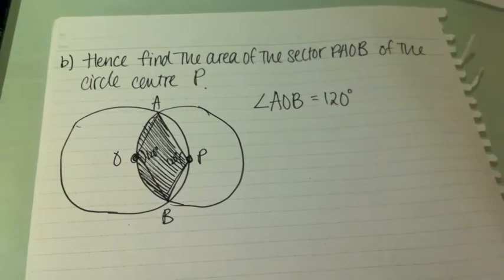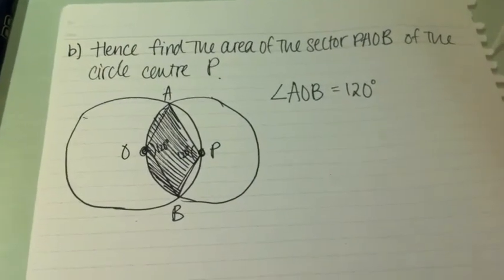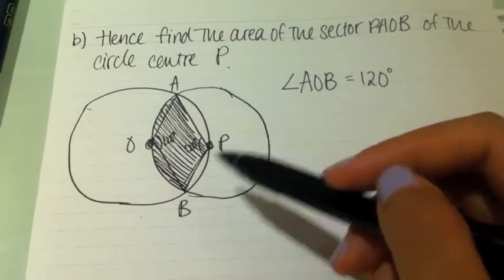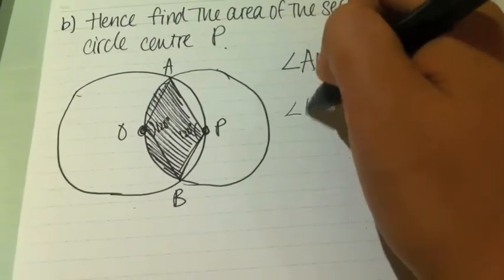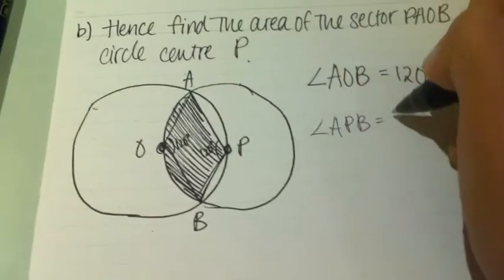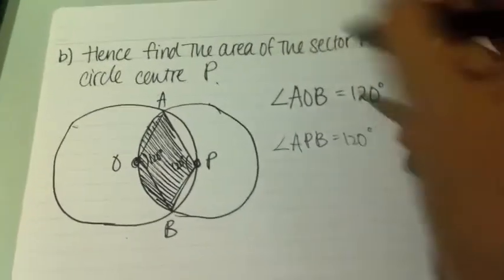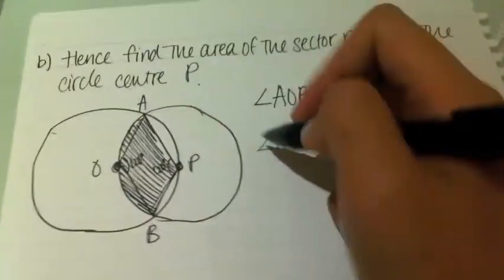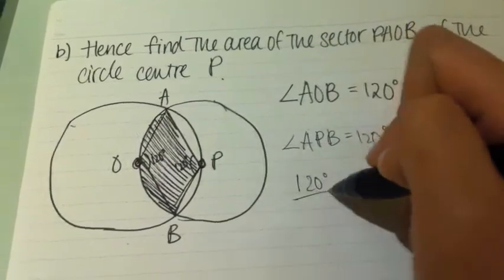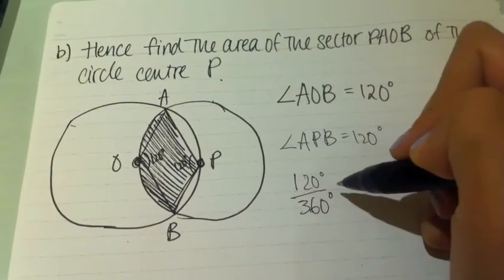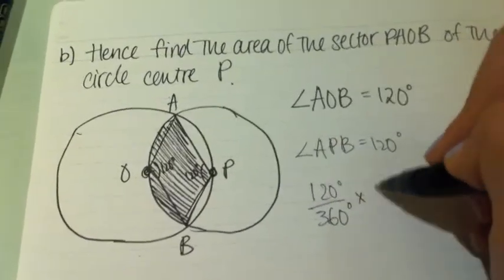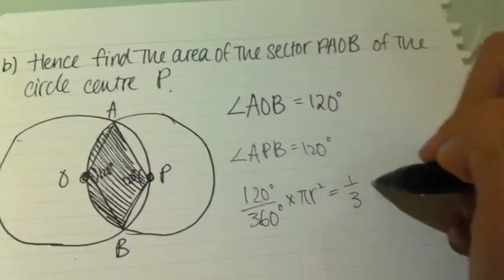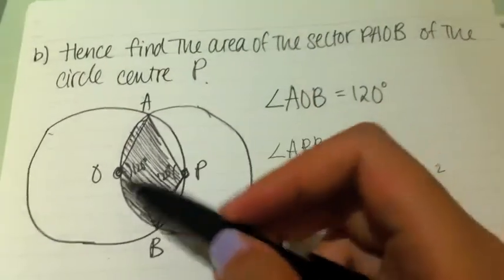From part A of question 2, we found that angle AOB equals 120 degrees, and angle AOB also equals 120 degrees. Therefore, the sector AOB of the circle centred at P would be 120 degrees over 360 degrees times πr², which equals one third πr², and that is the shaded area.